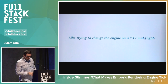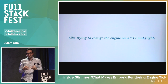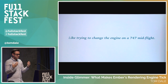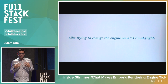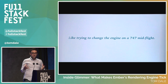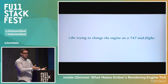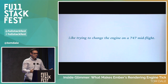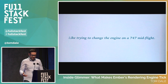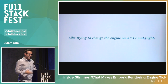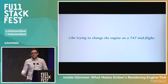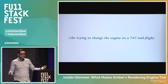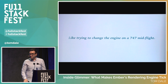Rewriting the entire rendering engine for a framework like Ember is a little bit like trying to change the engine on a 747 mid-flight. It's a huge undertaking, especially because we're planning on shipping this to users who have production apps being used by real users, and we really cannot break those apps. Ember has been around since 2011, so how do we deliver performance improvements to apps that could be four years old?